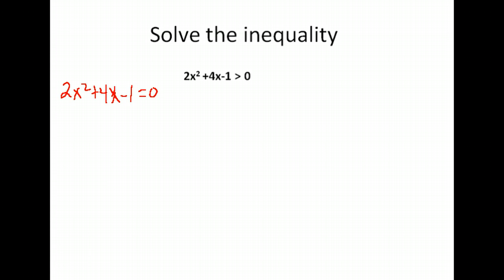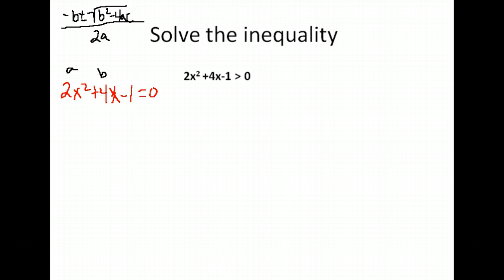We try to factor but it doesn't factor, so we're going to use the quadratic formula. That's negative B plus or minus the square root of b squared minus 4ac, all over 2a. Here, a is the coefficient of x², b is the coefficient of x, and c is the constant. So we have negative 4 for negative B, plus or minus the square root of 4 squared minus 4 times a (which is 2) times c (which is negative 1).